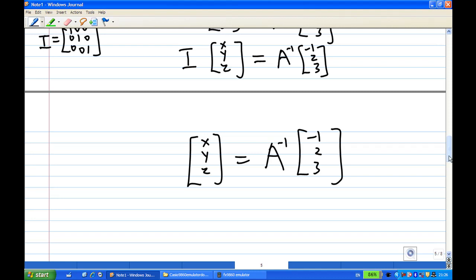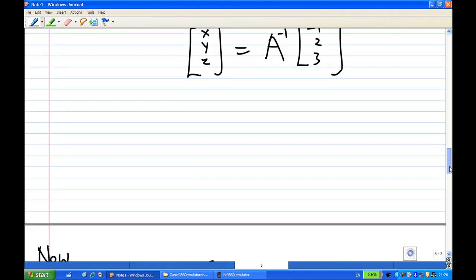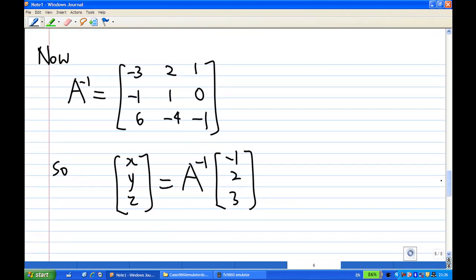Alright, so the whole thing is finding A inverse now. Based on our earlier calculation in another video, A inverse happens to be [-3,2,1; -1,1,0; 6,-4,-1].